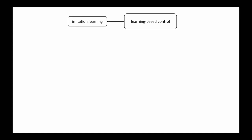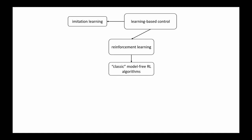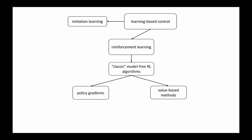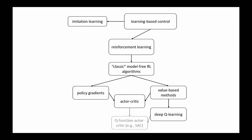I'll start with a brief retrospective concept map of the things we covered in this class. The class is broadly about learning-based control. We first talked about imitation learning, then reinforcement learning, covering classic RL algorithms including policy gradients, value-based methods, and actor-critic methods. We talked about deep Q-learning, actor-critic methods using Q-functions, and advanced policy gradient methods leading to practical algorithms like TRPO and PPO.